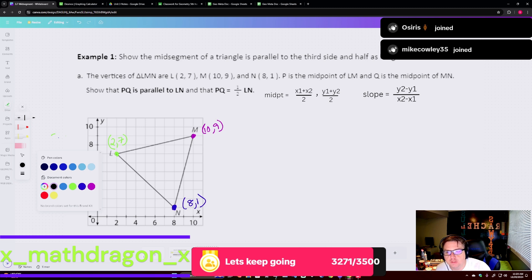So let's do some work. What they want us to do is show the midsegment of a triangle is parallel to the third side, and it's half as long as the third side. So one of the things we have, we got the ordered pairs. They tell us P is the midpoint of LM. So we're going to go P is here. Q is the midpoint of MN. Q is there. And then we want to show that PQ is parallel to LN. Well, there's a lot of things going on. First thing we want to do is find P.